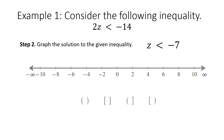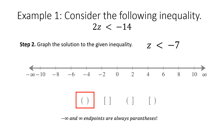Step 2: Graph the solution to the given inequality. We have z is less than negative 7. This is an open interval, so we're going to have a parenthesis at negative 7. Since z is less than negative 7, z is going towards negative infinity. I'll select two parentheses as my open interval. Note that anytime you have negative infinity or positive infinity, the endpoints are always parentheses. So I'll put a parenthesis at negative 7 and take the arrow all the way to negative infinity.